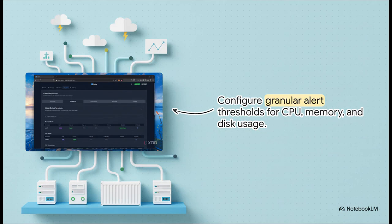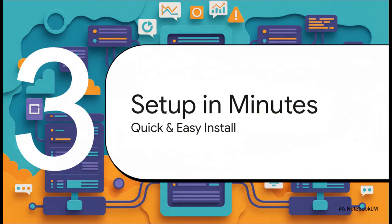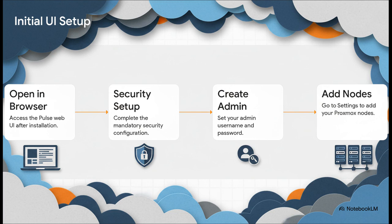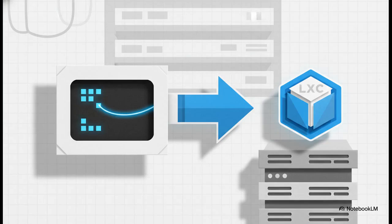Going back to that 3 a.m. panic — this is how you prevent it. You can set up super specific alerts for pretty much any resource: get notified when a VM's memory hits 85% or when a storage pool is 90% full. This is how you get a warning before things go critical. And installation is surprisingly simple — for Proxmox users, it's just a single command. The installer knows it's on a Proxmox host and automatically spins up a perfectly optimized LXC container for you. It's as close to a one-click install as you can get.